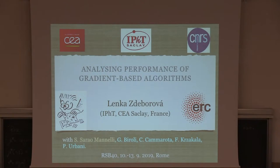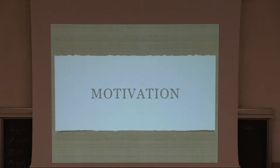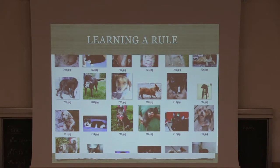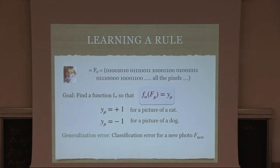First, motivation about why I'm interested in gradient-based algorithms. To motivate that I'll take a detour through the funny problem of recognizing which photo has a cat and which has a dog. For us humans this is a very easy task — the task of learning the rule. I give you a database, you study it, and then I give you pictures not in the database and you should classify: was this a dog or a cat?